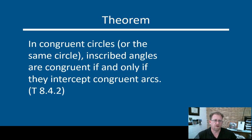There's another theorem here. In congruent circles, or if you're talking about the same circle, inscribed angles are congruent if and only if they intercept congruent arcs. So we just said that the inscribed angle measure is half the measure of the intercepted arc. So in order for intercepted angles to be congruent, they have to intercept congruent arcs. And if the arcs are congruent, then the angles are congruent. It's one of those back and forth biconditional sorts of situations.